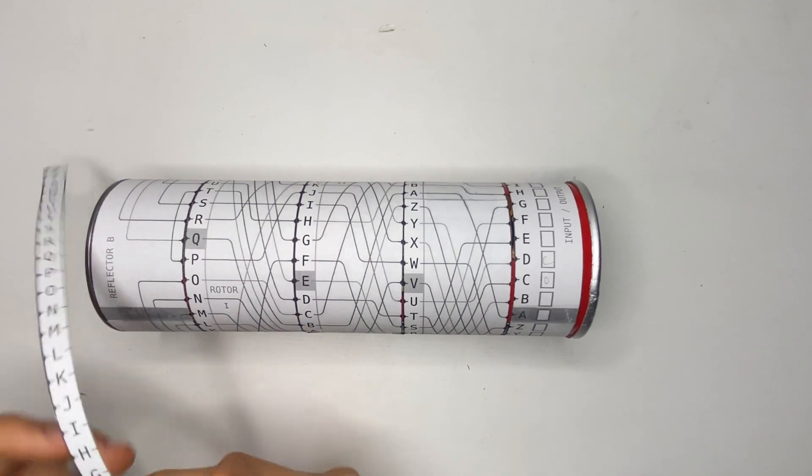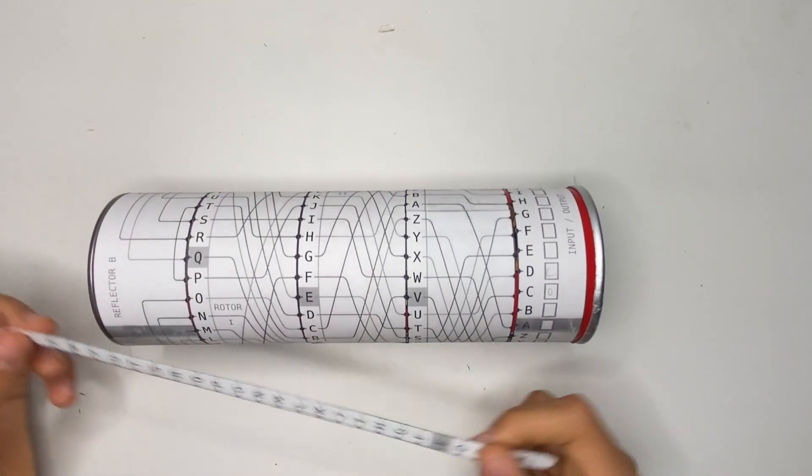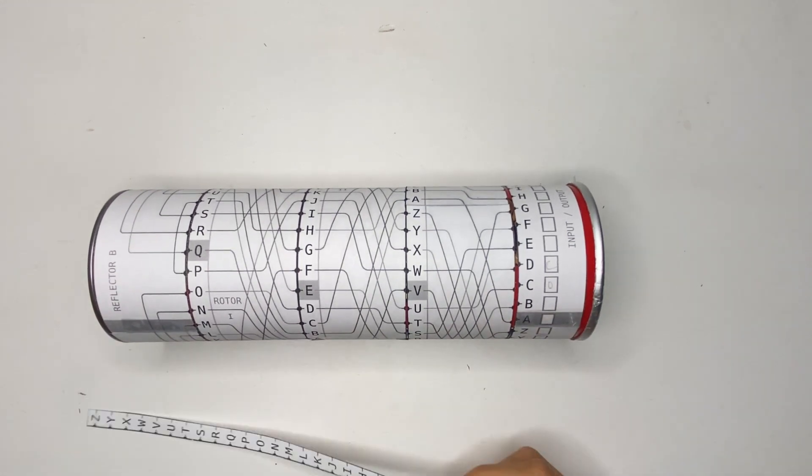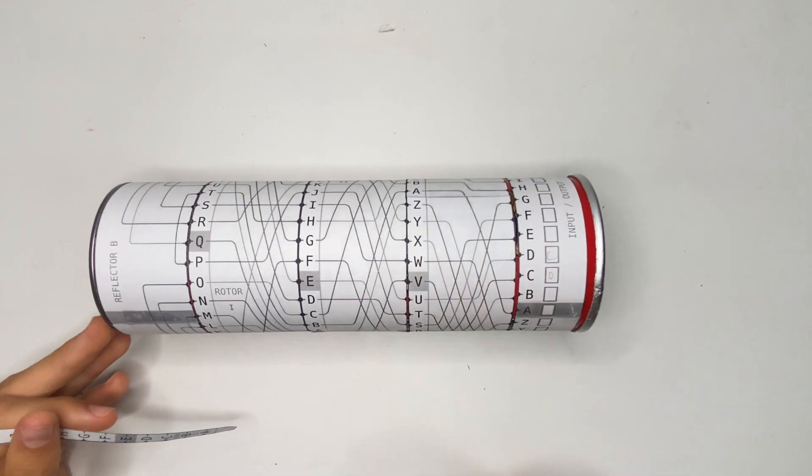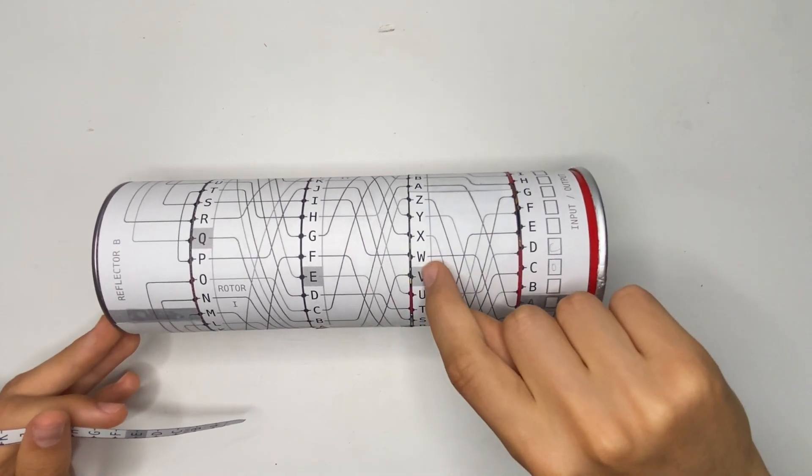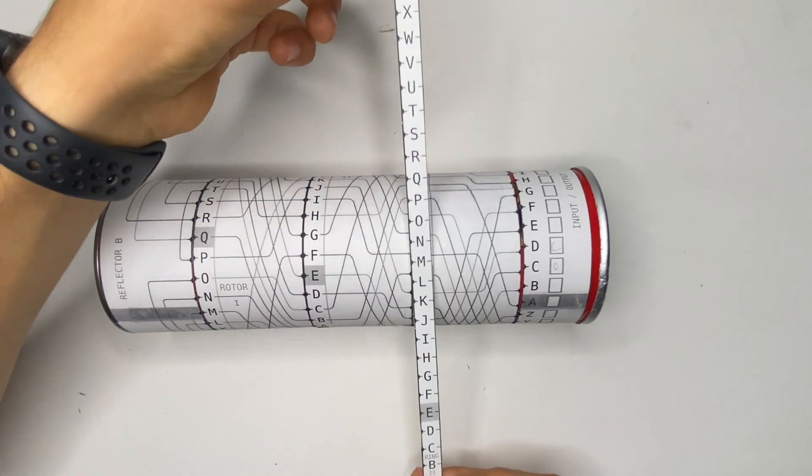Now, I also mentioned at the start about rings. So on the actual Enigma machines, they could change where the next rotor would start ticking at. So they could actually move where this gray tab was. So on this, that's represented by these rings.